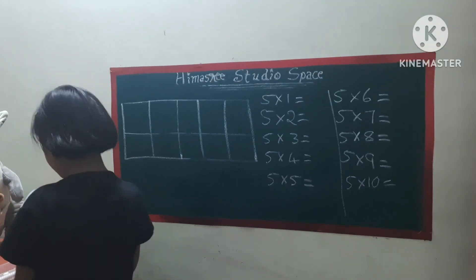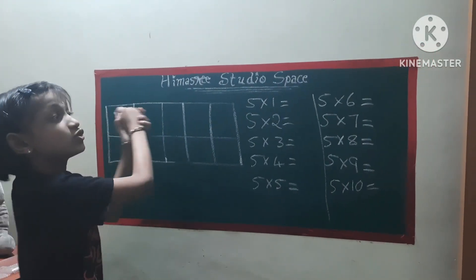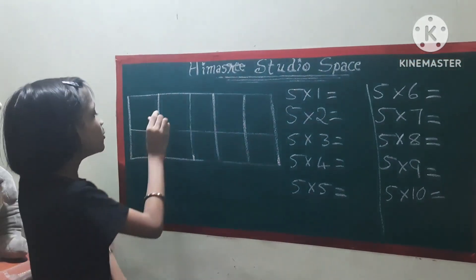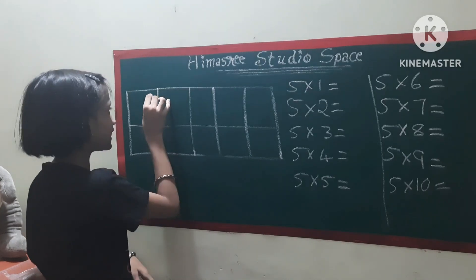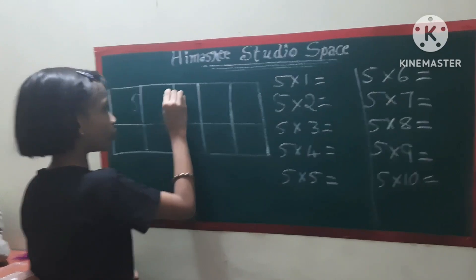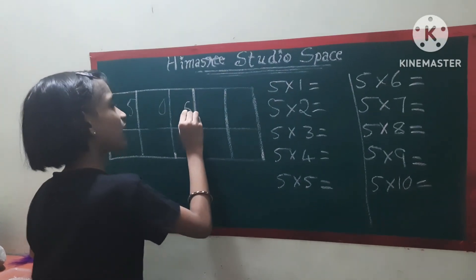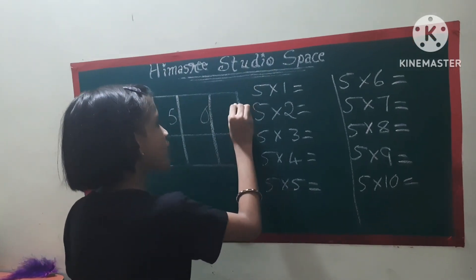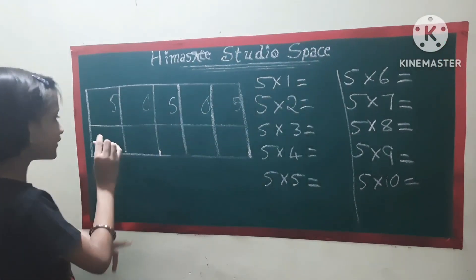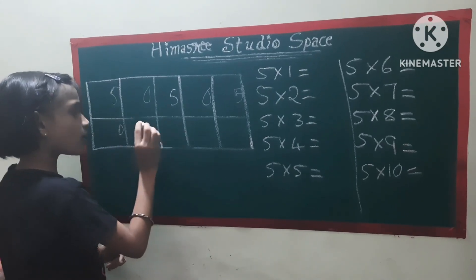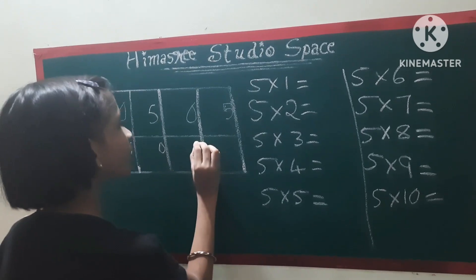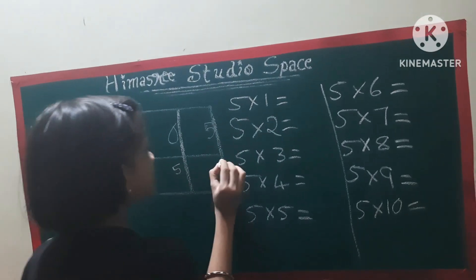So, now all we got to do is get that 2 by 5 grid in one place. We will be writing 5, 0, 5, 0, 5 and opposite for here: 0, 5, 0, 5, 0.